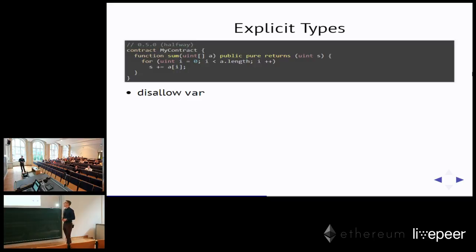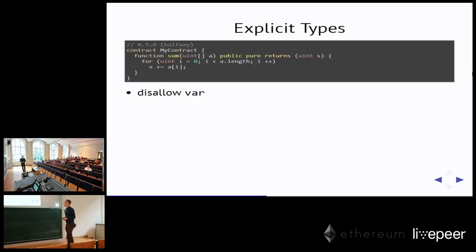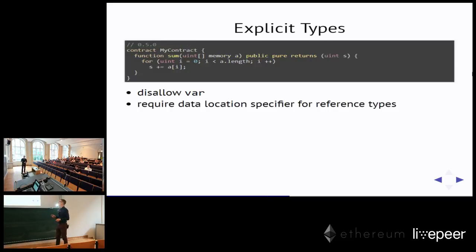Another thing: a is a reference type — an array — which can point either to memory, storage, or calldata. In many situations you make the wrong assumptions about where it actually points, and because of that we force the memory keyword to be used always when you declare a variable of a reference type. This makes the data location explicit.